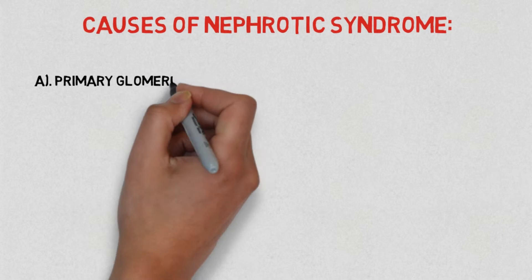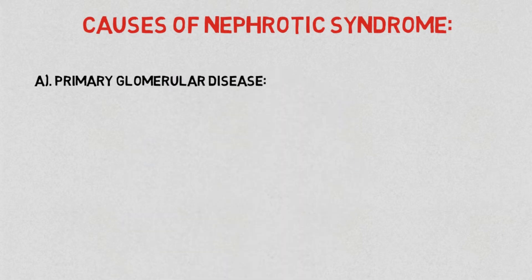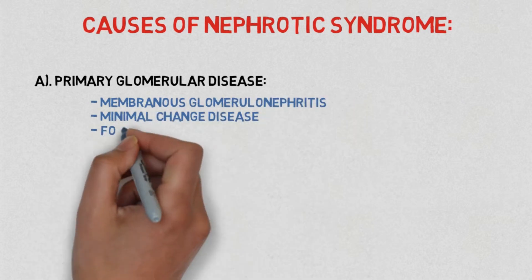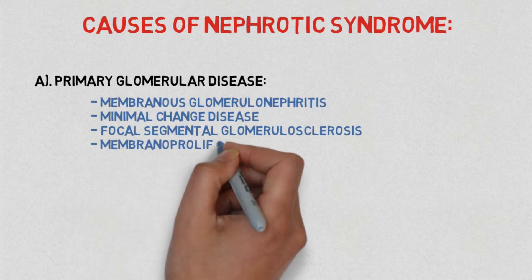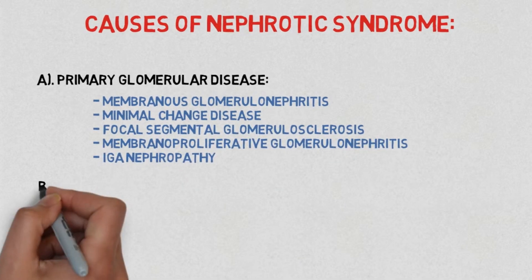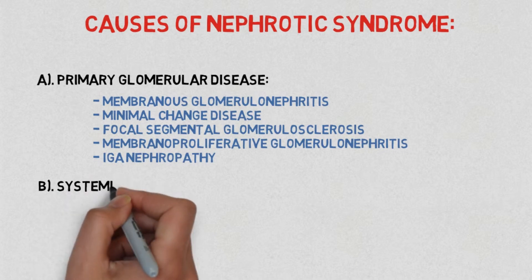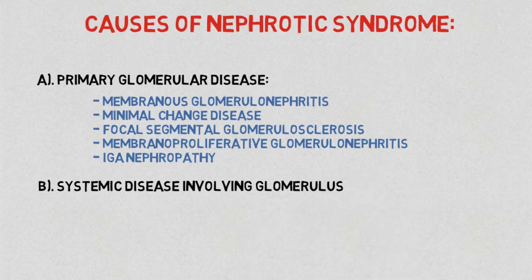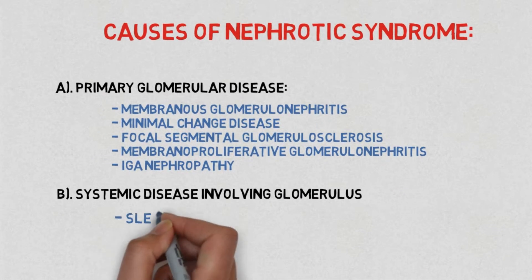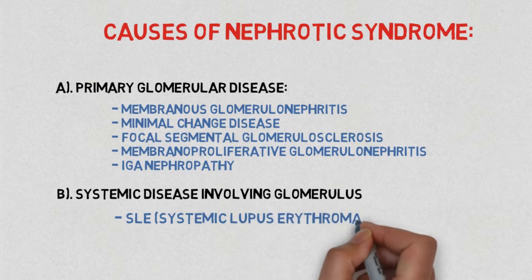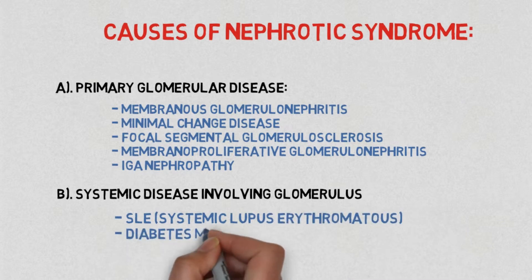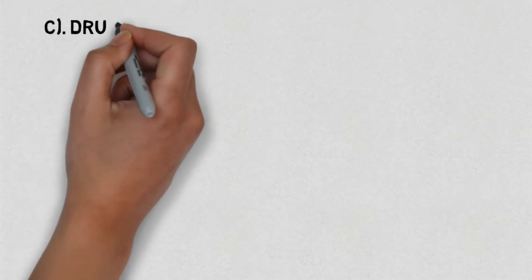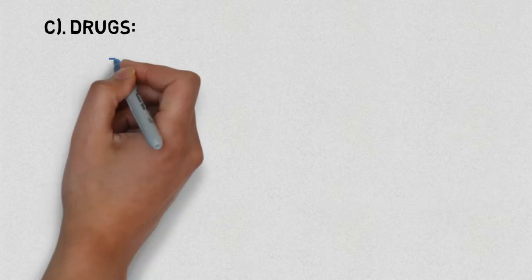For primary glomerular disease, the causes are membranous glomerulonephritis, minimal change disease, focal segmental glomerulosclerosis, membranoproliferative glomerulonephritis, and IgA nephropathy. For systemic disease involving the glomerulus, the subtypes are SLE (systemic lupus erythematosus), diabetes mellitus, and amyloidosis.